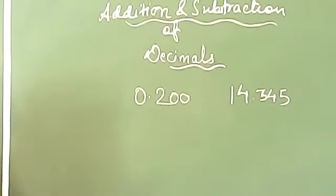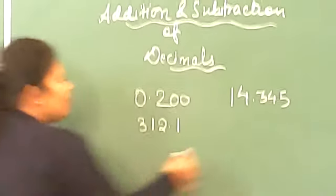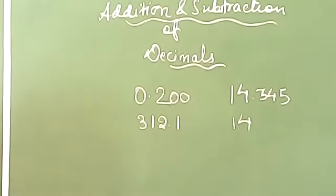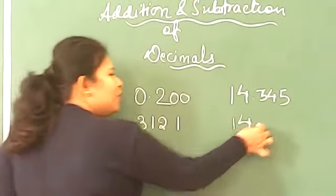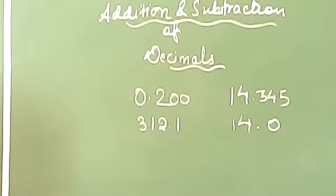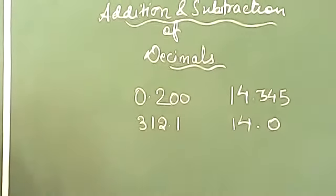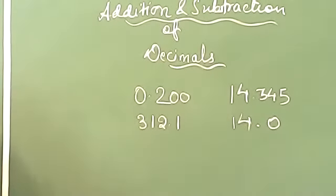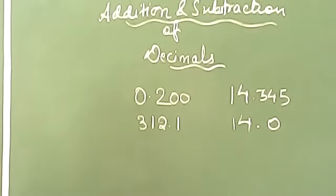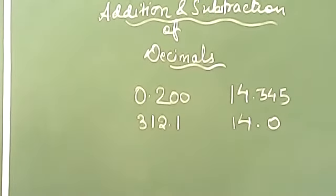Clear? Suppose you have a number as 312.1 and you have another number as only 14. There is no decimal part. So what will you do? Here you will just put a decimal and put a zero. Now it is again a like decimal. So remember after decimal you should have same number of digits on both the numbers. If you don't have, put zeros.